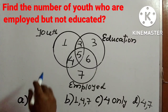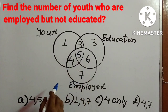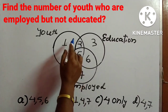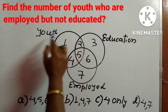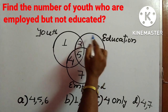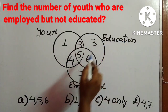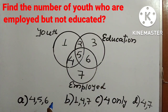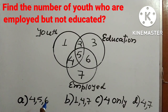This is a question of Venn diagram and we have three sets. This one is for youth, this circle represents education, and this circle represents employed. We need to find out the number of youth who are employed but they are not educated.